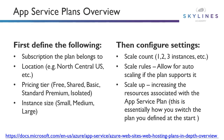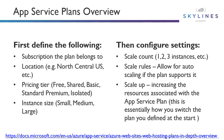You'll notice that the pricing pretty much maps to the VM sizes if you went and deployed a VM for IaaS. Once that's set up, you configure your settings — things like scale count, how many instances you want under the covers, what your scale rules are to allow for auto-scaling if the plan supports it. You can also scale up, increasing the resources associated with the App Service Plan, which is how you would switch the plan you defined at the start if you wanted to increase resources.